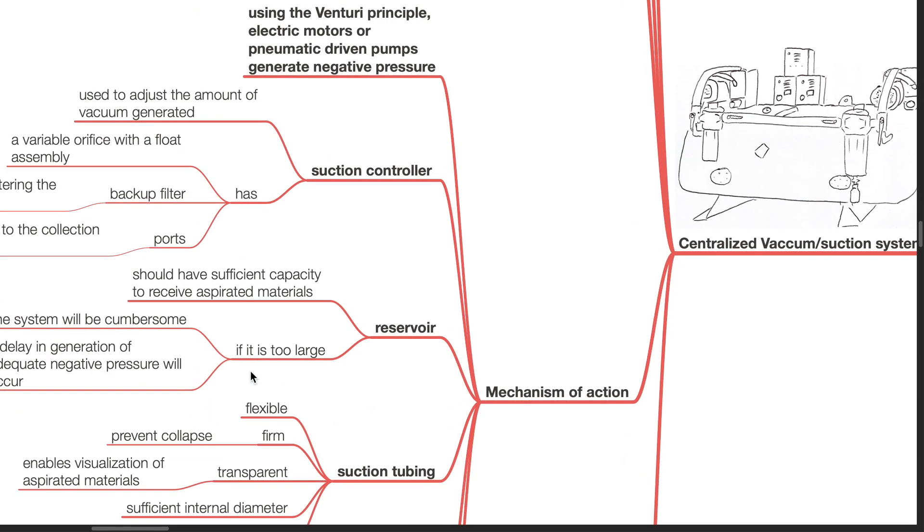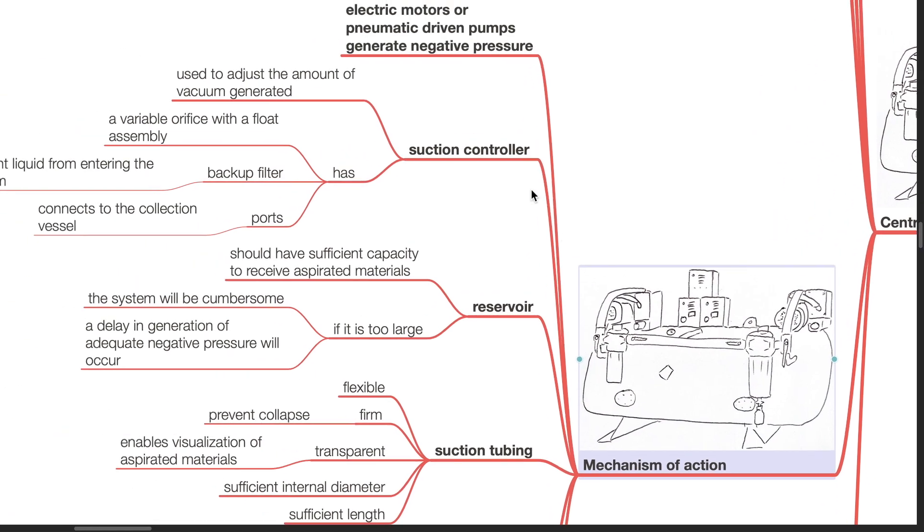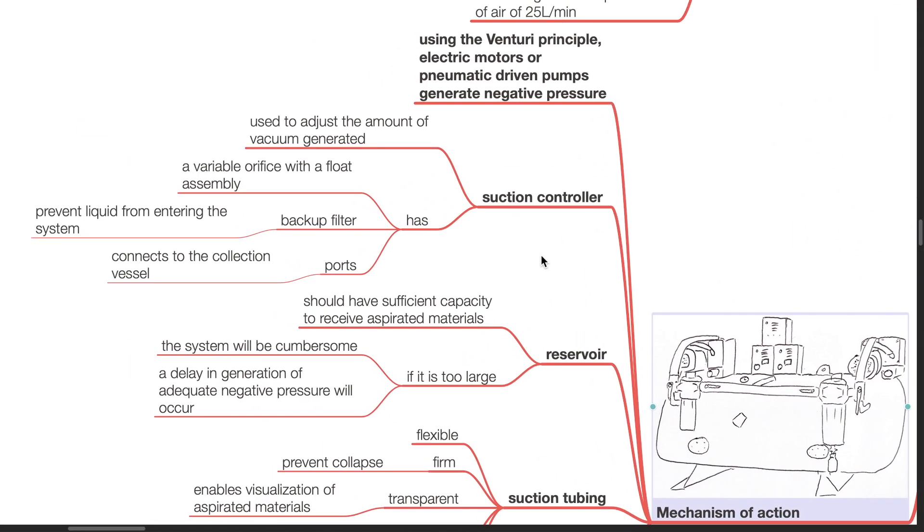Mechanism of action: Using the Venturi principle, electric motors or pneumatic driven pumps generate negative pressure. Suction controller is used to adjust the amount of vacuum generated. The suction controller has a variable orifice with a float assembly, backup filter which prevents liquid from entering the system, and ports to connect to the collection vessel.